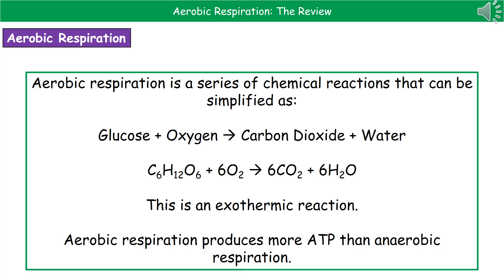The balanced symbol equation is: glucose, C6H12O6, plus oxygen, O2, makes carbon dioxide, CO2, and water, H2O. If they ask you to balance aerobic respiration, there's one neat trick to remember: 6s go in front of everything but the glucose — so 6 in front of oxygen, carbon dioxide, and water. This is an example of an exothermic reaction, which means it transfers energy to the surroundings. Aerobic respiration produces more ATP molecules — the energy currency of our cells — than anaerobic respiration, which we'll look at in our next video.